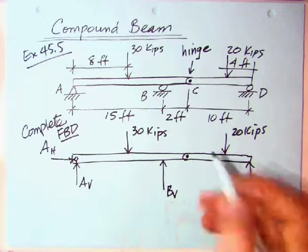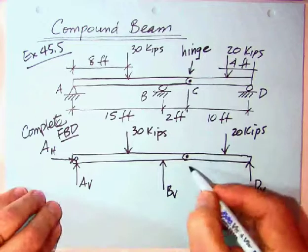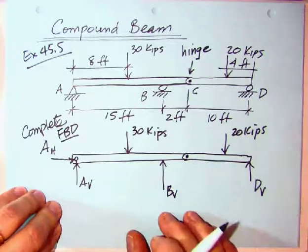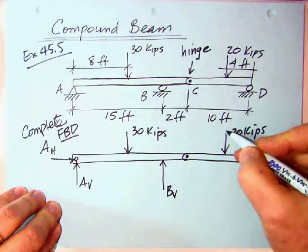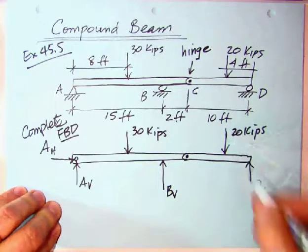just a single roller. Of course, this is point C here, although we don't need to really label it. We have got 20 kips over here, 4 feet from the right. So we have that. And then our DV.